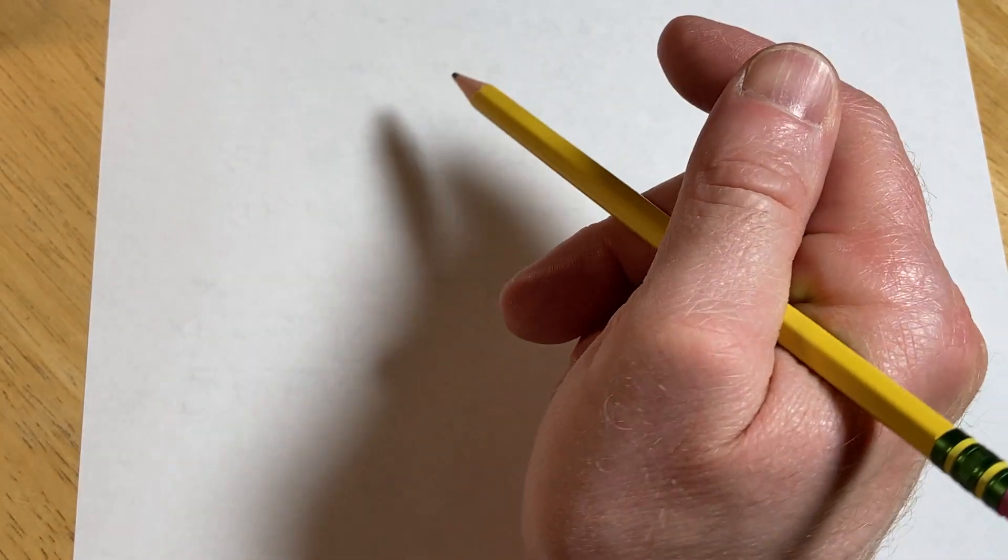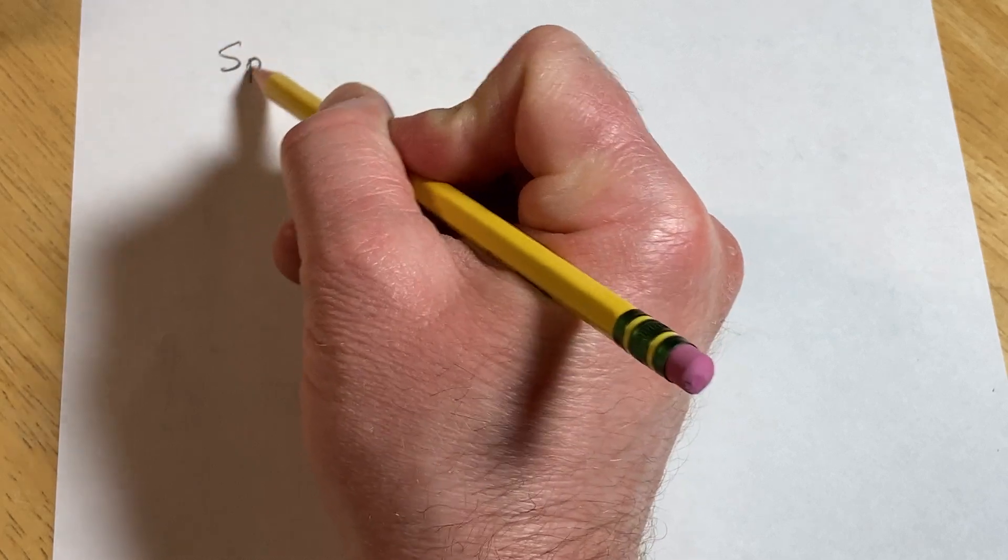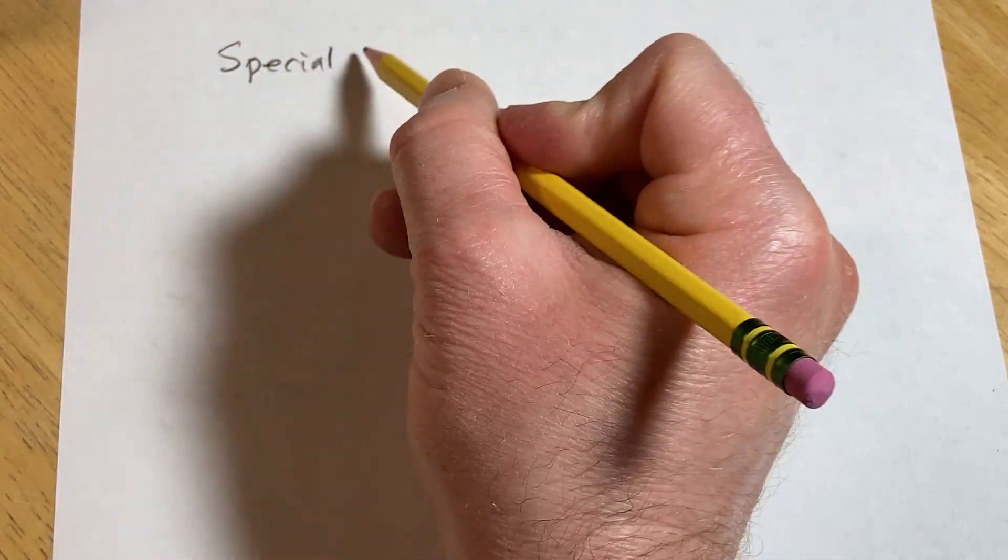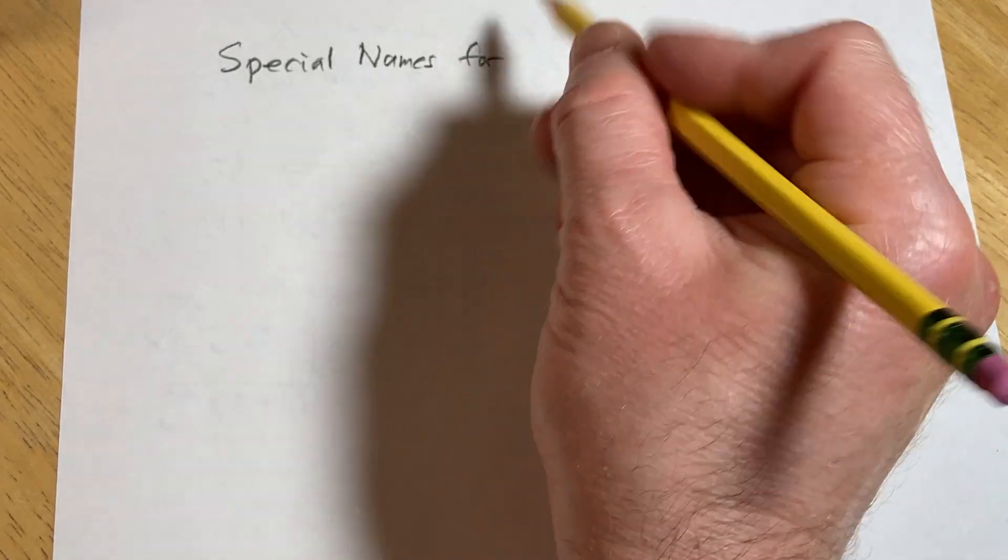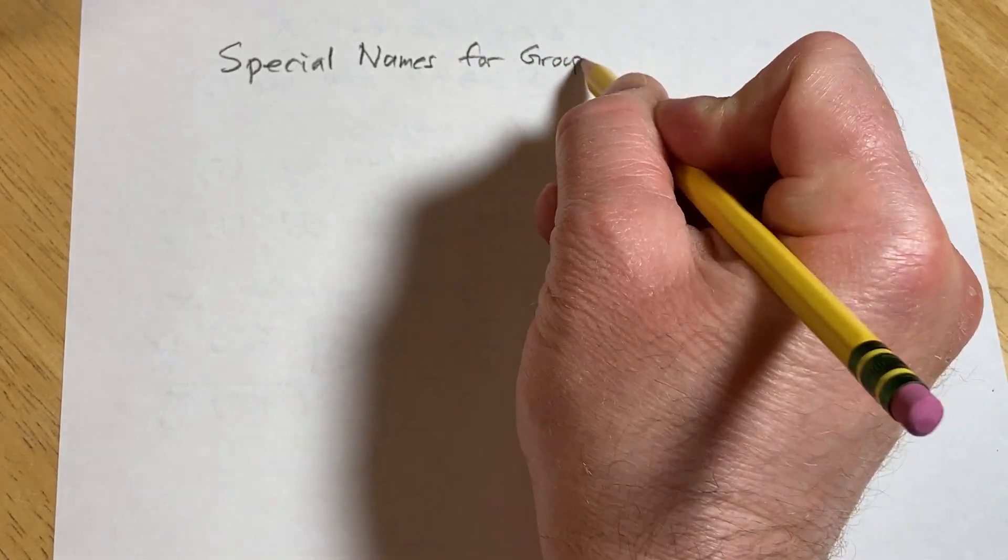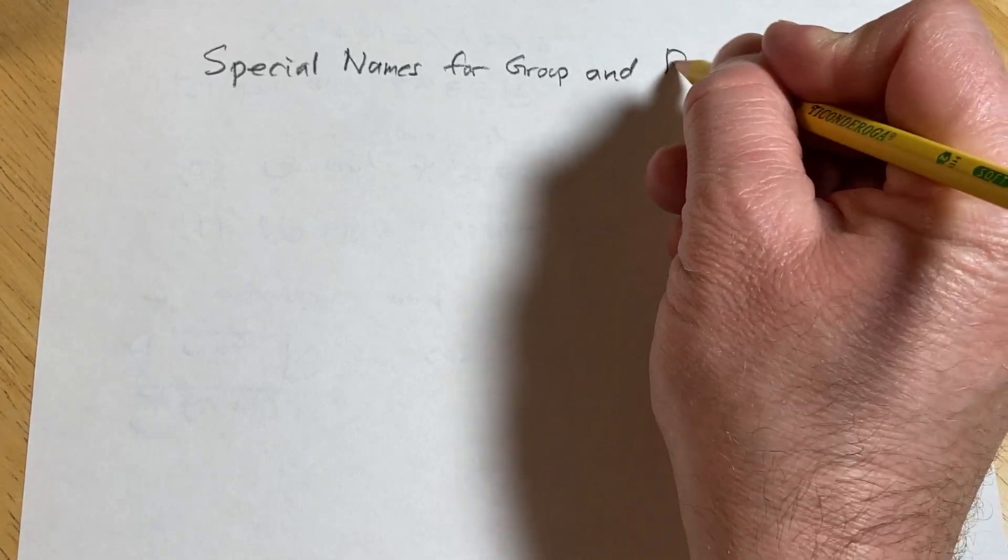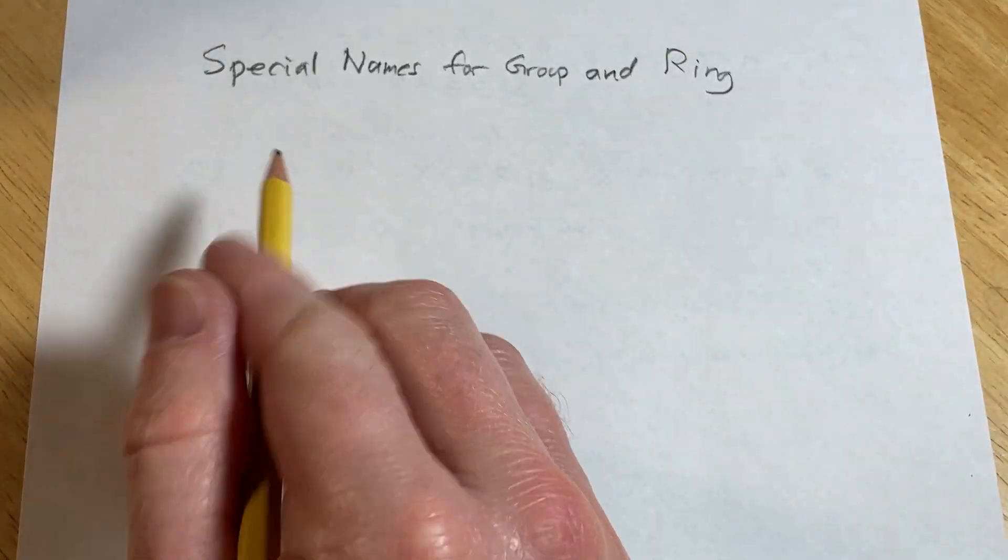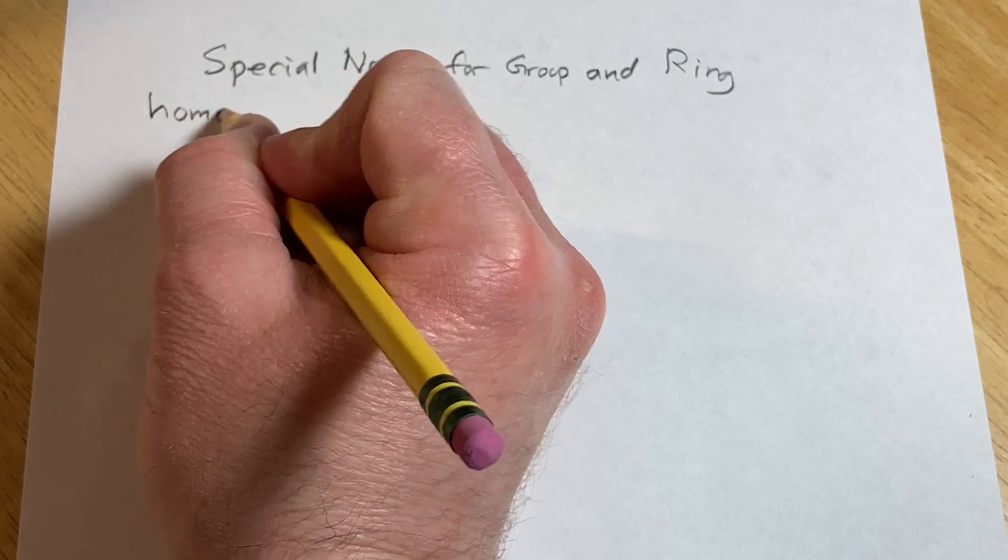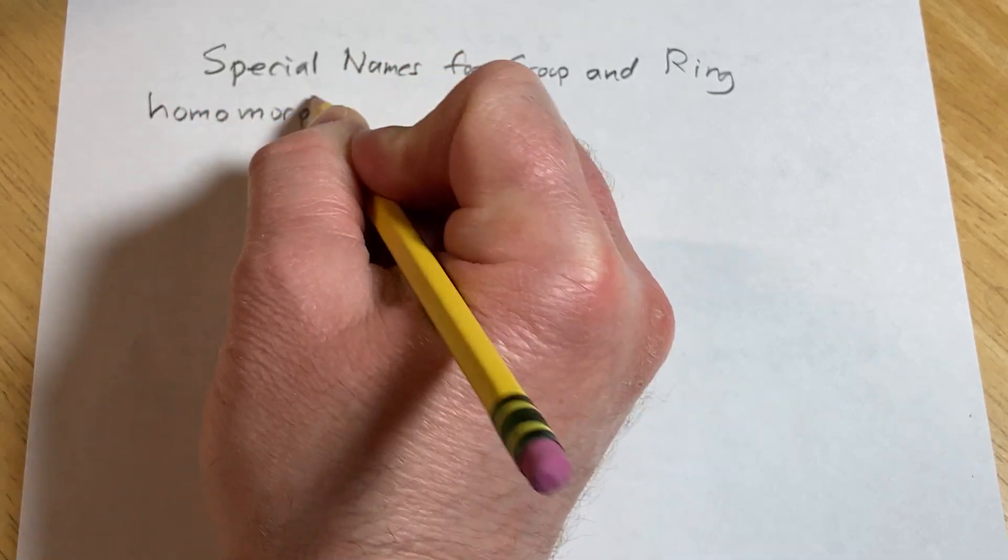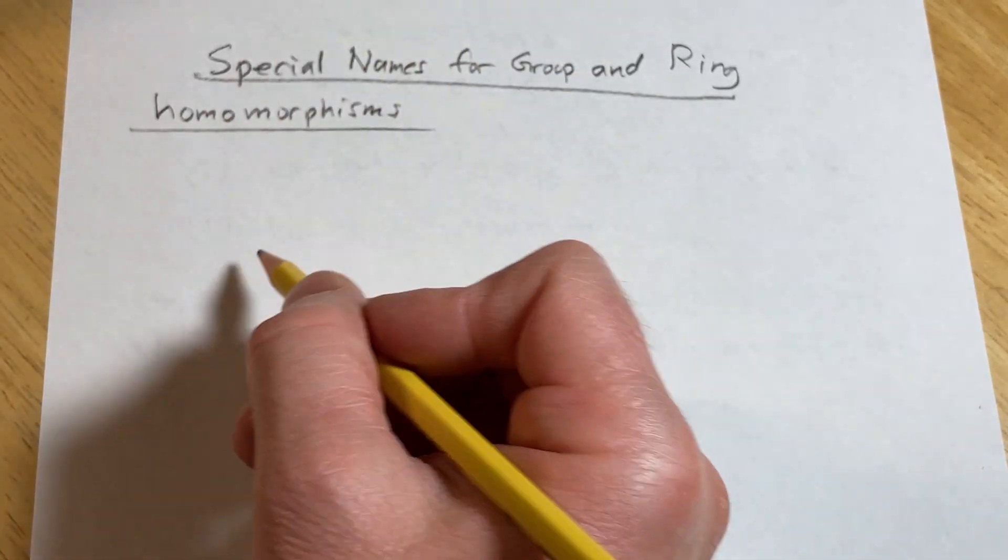Hello, I want to talk about some special names for group and ring homomorphisms. Special names for group and ring homomorphisms. I want to talk about in this video.